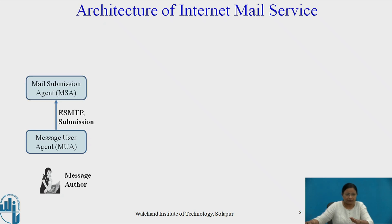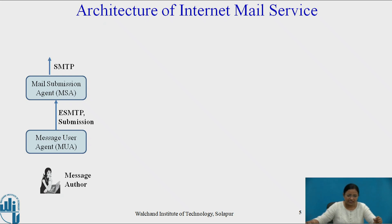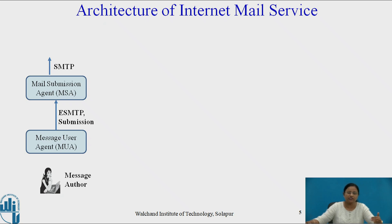The author MUA formats a message and performs initial submission to the mail submission agent. Formatting of the message is done by the MUA and it is submitted to the mail submission agent. The mail submission agent accepts the message submitted by the source message user agent, enforces the policy of the hosting domain and the requirements of internet standards. This function may be located together with the message user agent or as a separate functional module. The SMTP or extended SMTP protocol is used for submission of a message from the message user agent to the message submission agent.